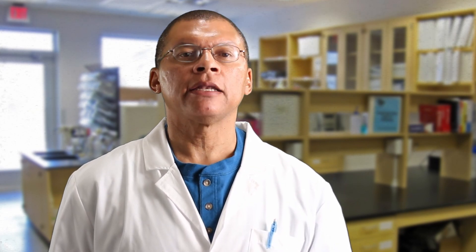The higher the pressure, the smaller the droplet size. So if you know the droplet size at a particular pressure and you want to change that pressure either higher or lower, use this equation to determine what your new droplet size will be from that nozzle.